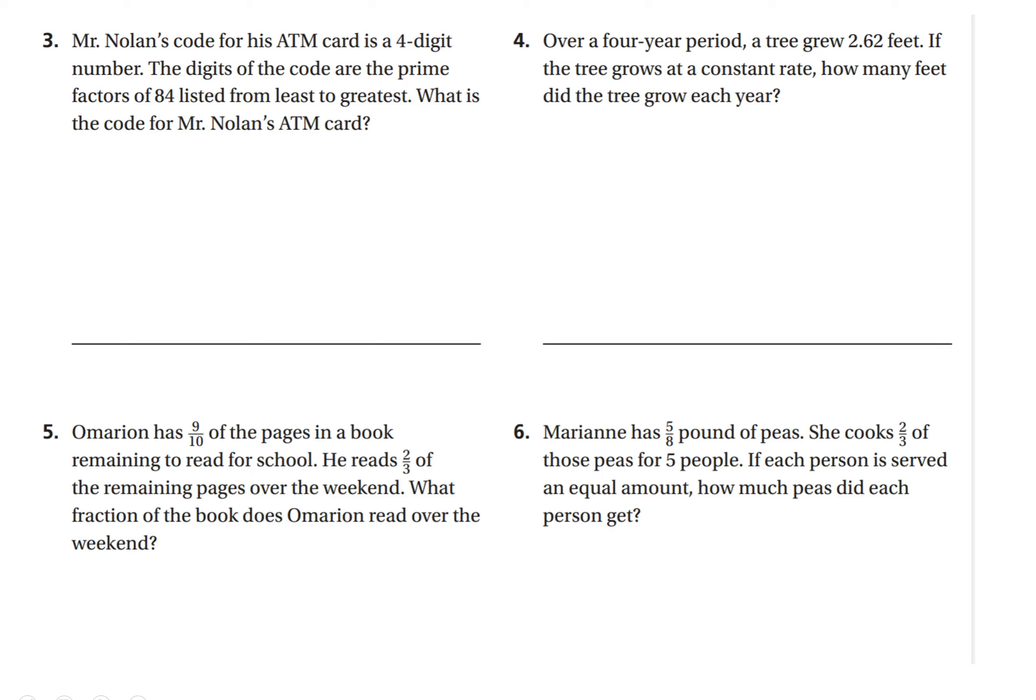So let's get right to it. Number three, Mr. Nolan's code for his ATM card is a four-digit number. The digits of the code are prime factors of 84, listed from least to greatest. What is the code for Mr. Nolan's ATM card?